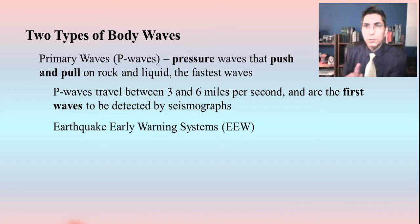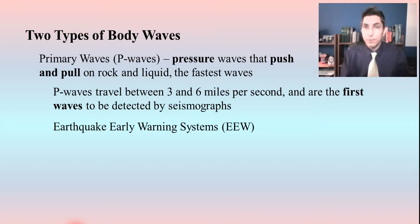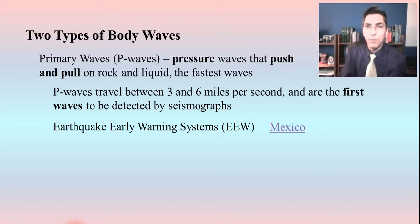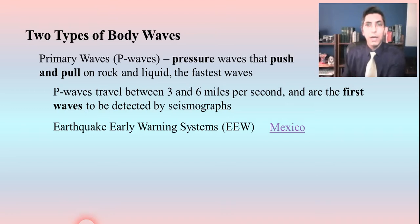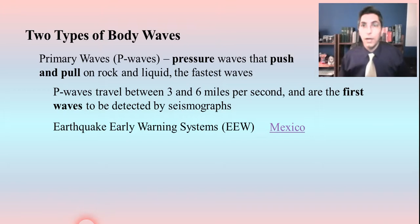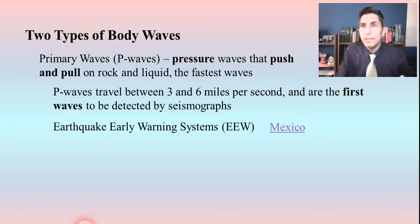Once those P waves are detected, seismographs can pick them up. As a human, you usually cannot feel a P wave — most people cannot feel them. However, seismographs can, and this is the basis of a certain type of warning system called an earthquake early warning system, or EEW. These systems have been developed in several countries around the world. Mexico is one of them — in the description I have a link to live TV footage of an EEW actually detecting an earthquake in Mexico.